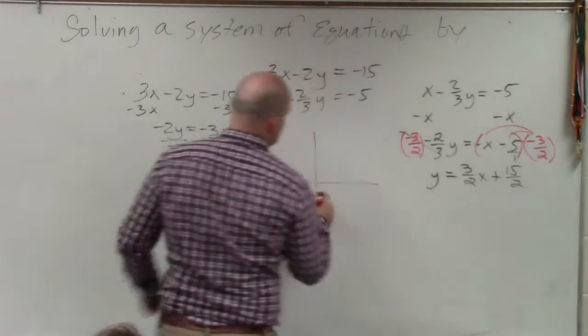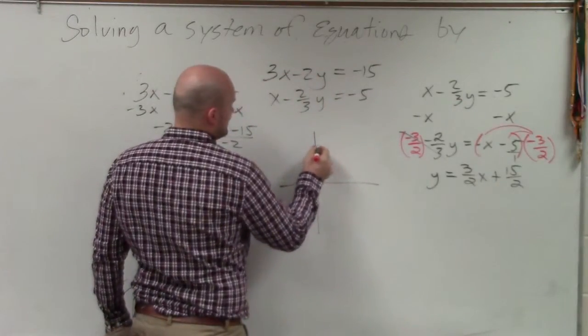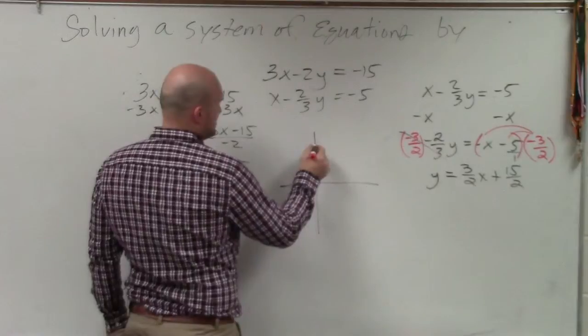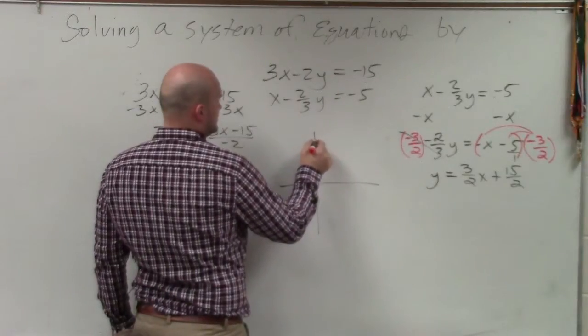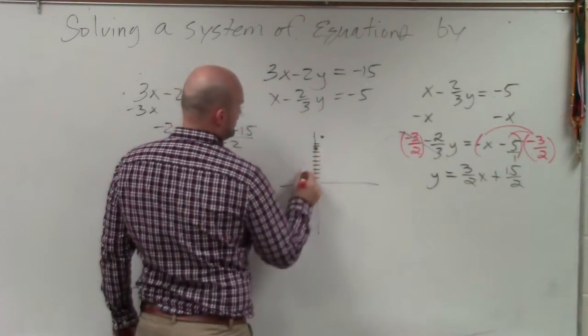And 15 halves is like 7.5. 1, 2, 3, 4, 5, 6, 7, 8. And then 3 over 2: 1, 2, 3 over 2. It's going to look something like that.